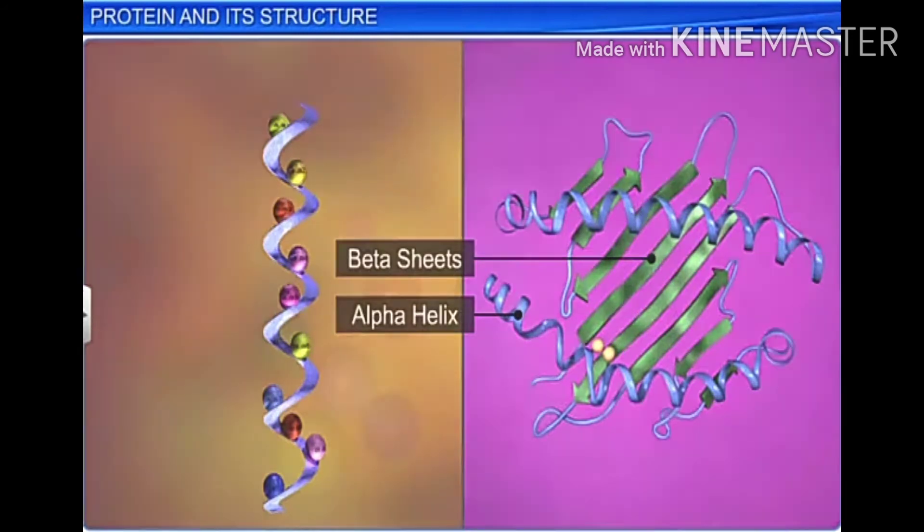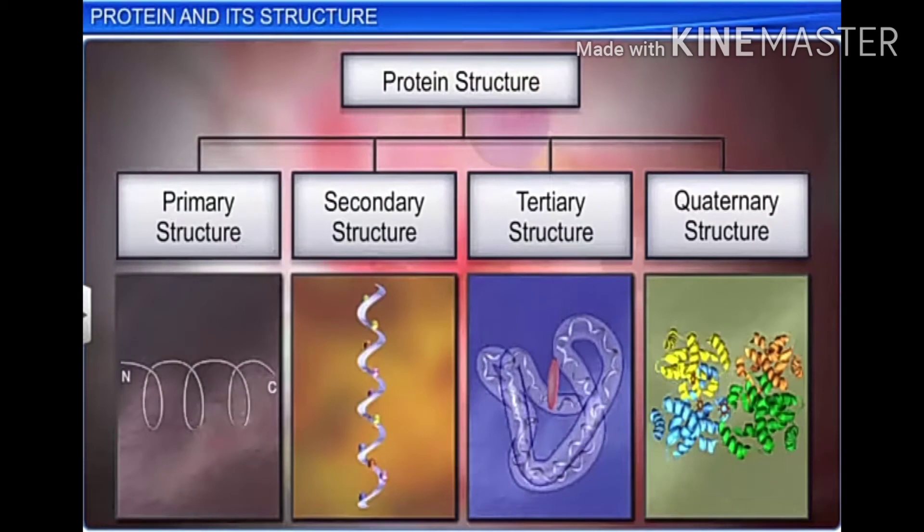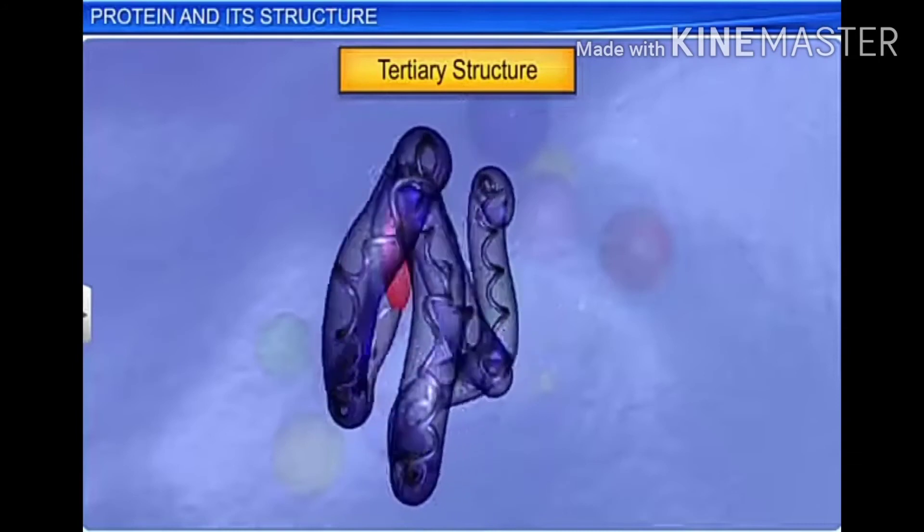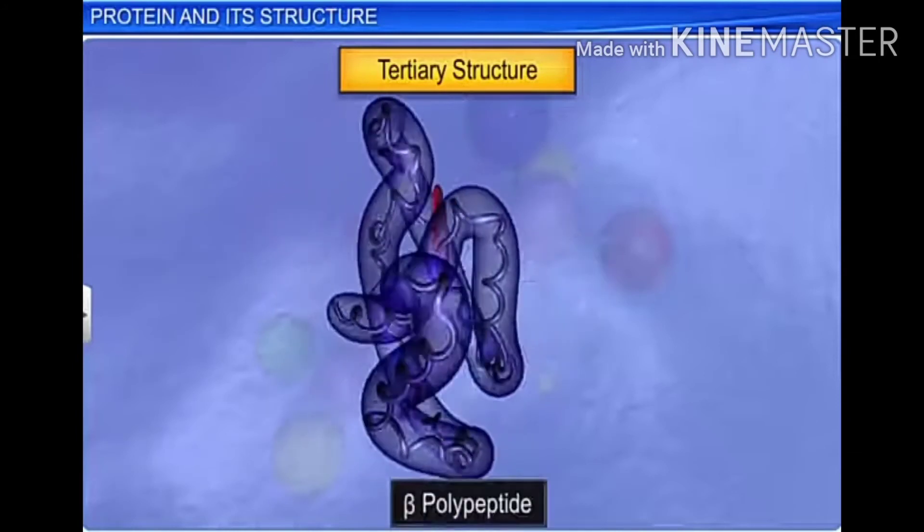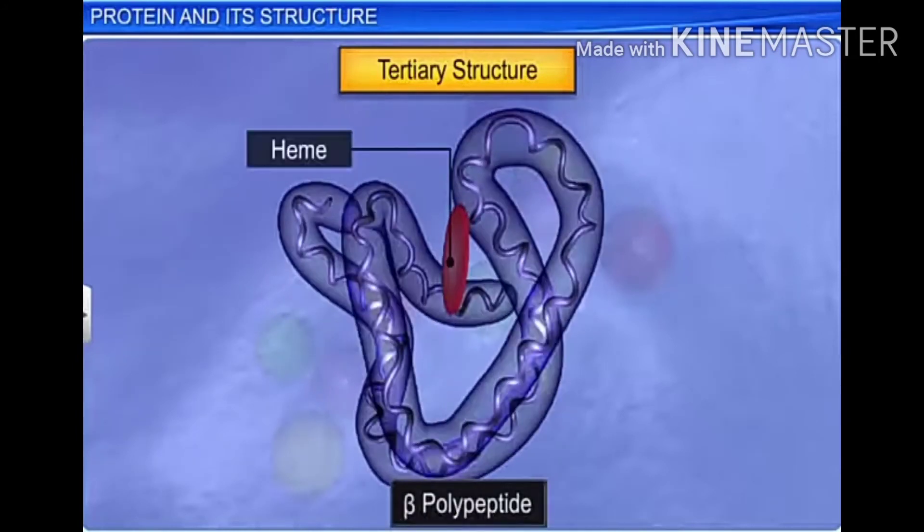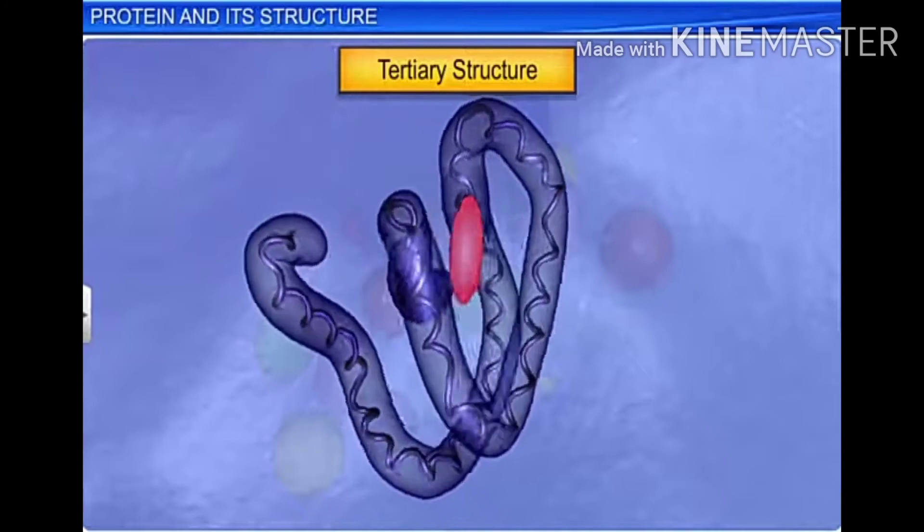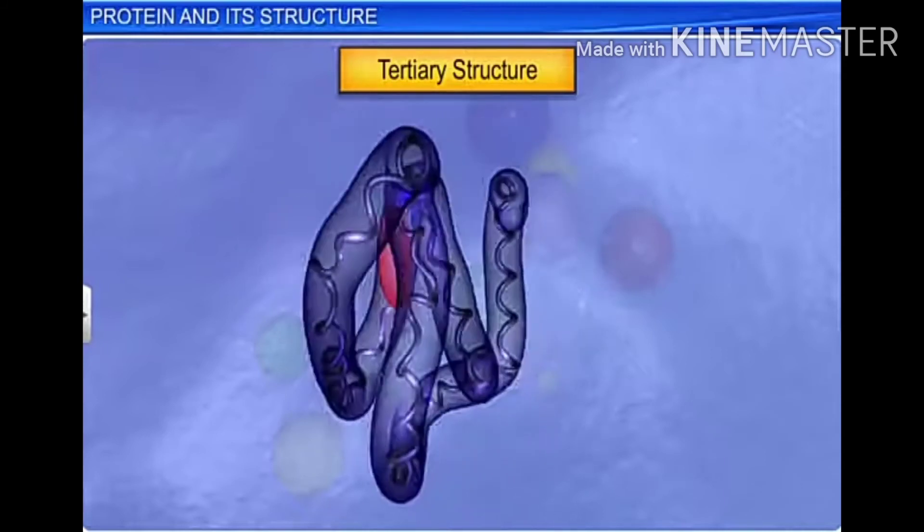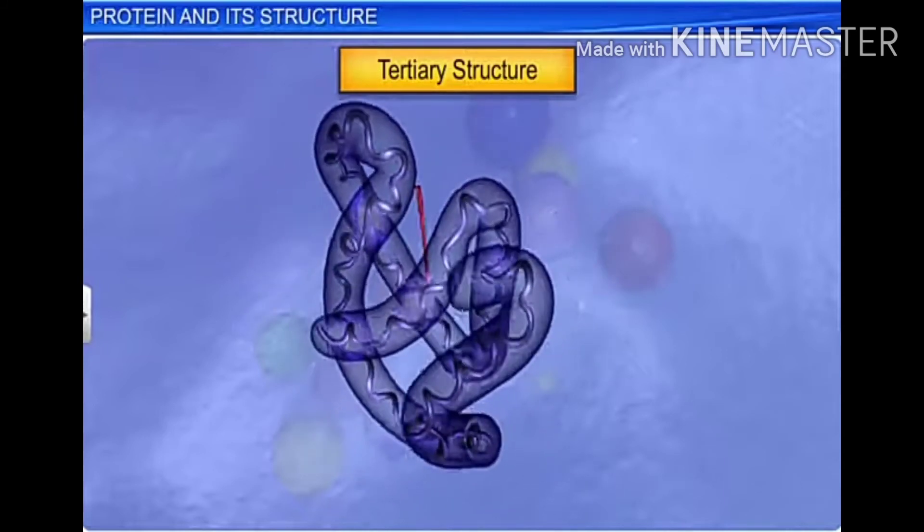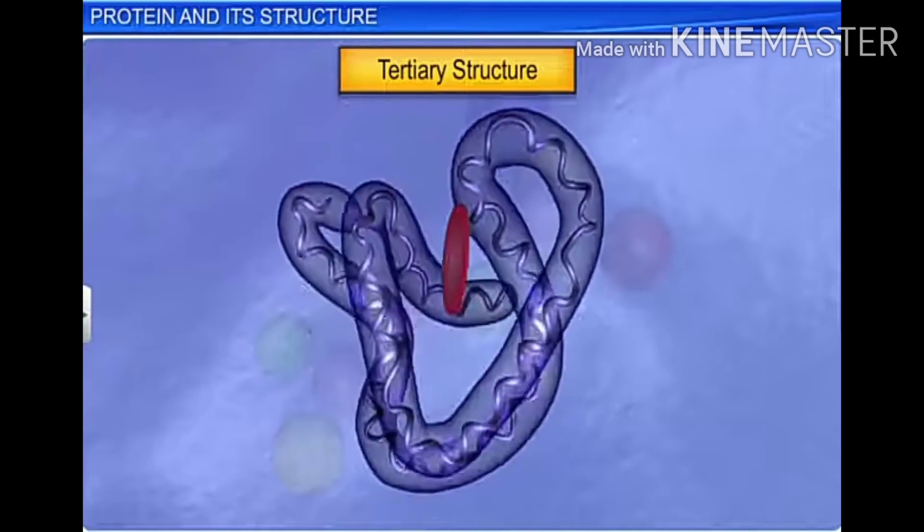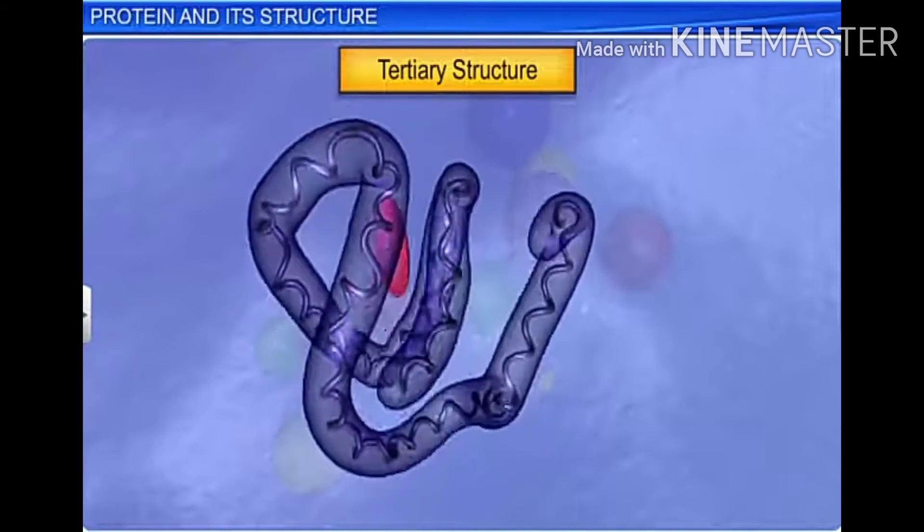The third level of protein structure is the tertiary structure. It refers to the three-dimensional structure of the entire polypeptide chain. The function of a protein, except as food, depends on its tertiary structure. If this is disrupted, the protein is said to be denatured and it loses its activity.